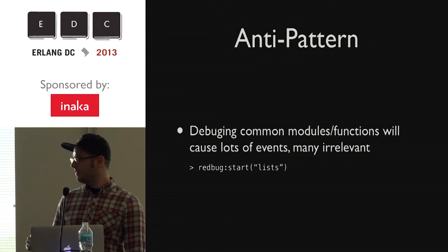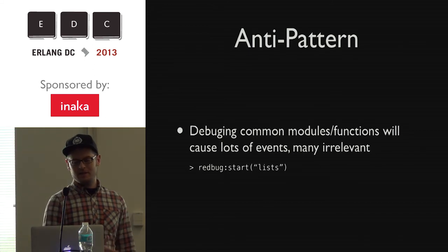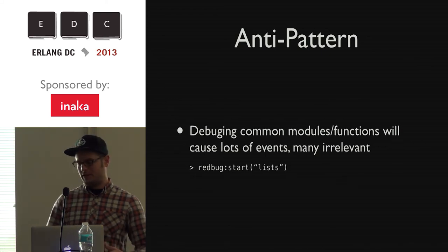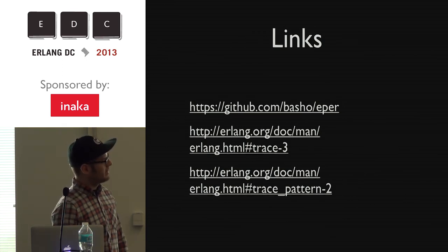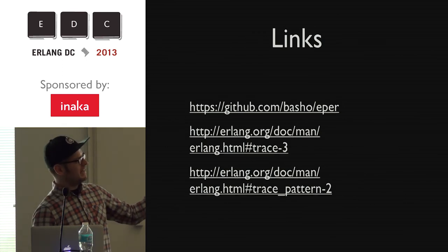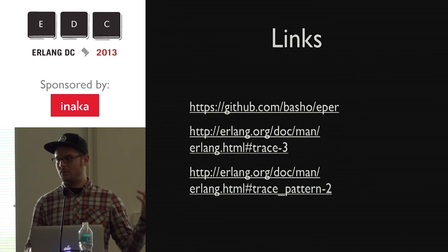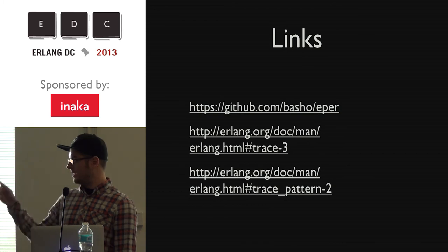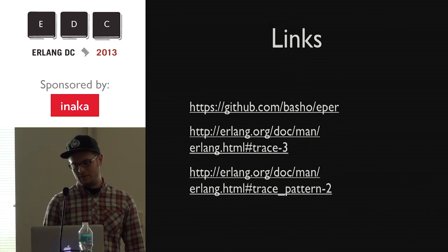An anti-pattern with Redbug is doing something like saying show me all calls to lists, because in Erlang a lot of things call lists, so you're going to generate a huge number of trace messages. The main link to know about is ePer — that's actually what Redbug lives under; it's something like Erlang Performance something. That's the repo Redbug is under and it gives you a nice overview.